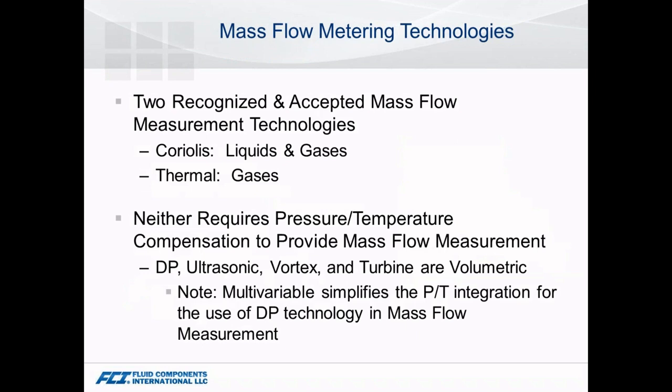Now let's change over to the metering side — specifically mass flow metering. Within the industry, there are two recognized and accepted technologies, with thermal being one of them. Coriolis works for many media, while thermal is really focused on gases. They are both mass flow because neither one requires a secondary pressure-temperature compensation to convert a volumetric reading to mass flow.